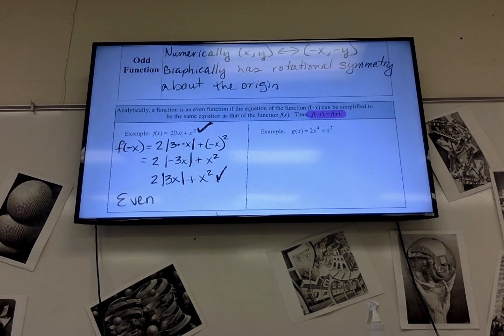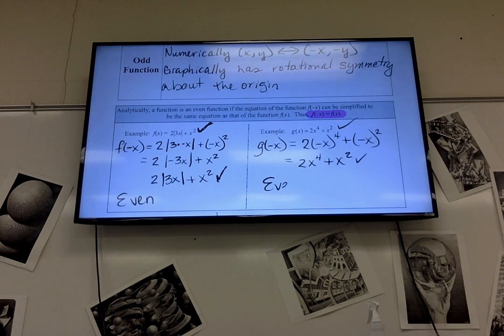Same thing with g of x. I'm going to plug in g of negative x. So, it's 2 times negative x to the 4th plus negative x squared. How do I do negative x to the 4th? It would just be x to the 4th. Right. Because it's negative 1 times negative 1 times negative 1 times negative 1. Since it's even, it's positive. And then x to the 4th is just x to the 4th. And then negative x squared, we did that in the last problem. That's just positive x squared. Notice you get the exact same thing. It's even.